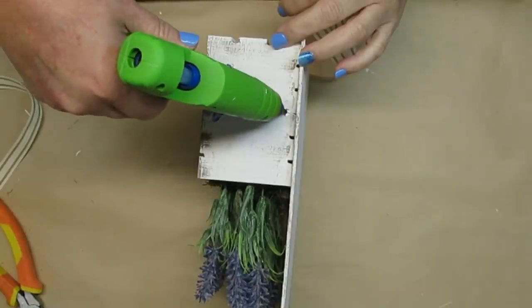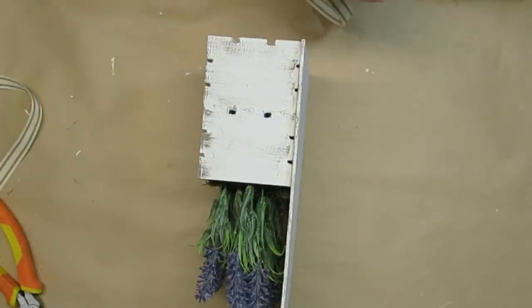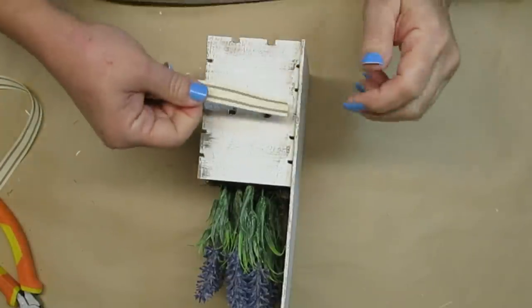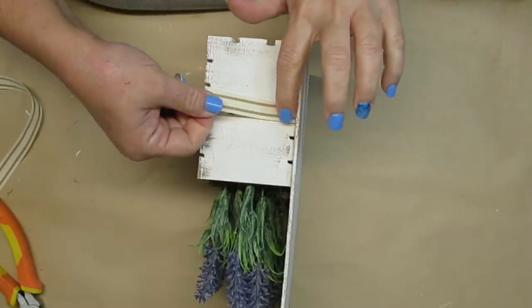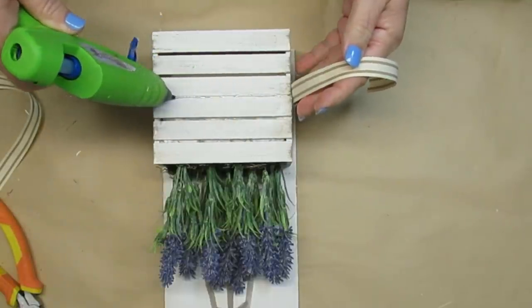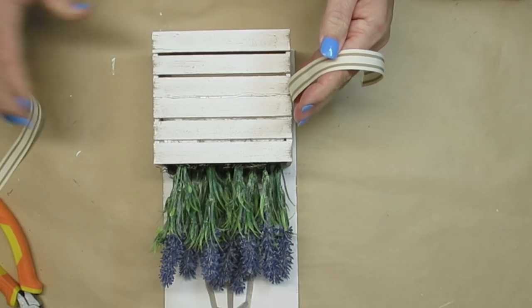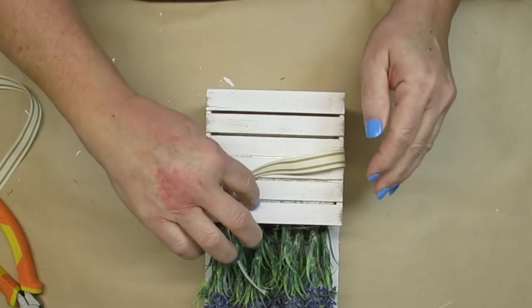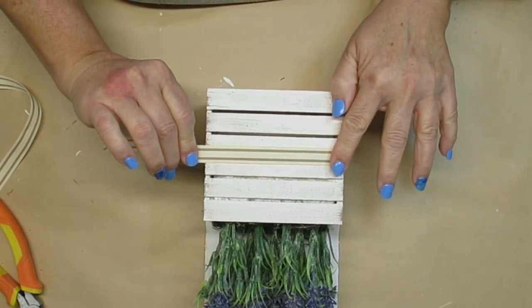The last thing I'm going to do to this crate design is to add a little bit of this ticking stripe ribbon. It has sort of the same stripe color as the clay and I thought it would be a really nice match. I'm going to glue it starting on the side here, along the front and then down the other side.